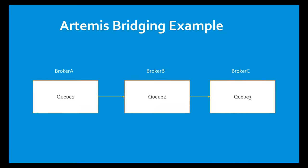Consider this network topology: to transfer messages from Broker A to Broker C — from Q1 to Q3 — the messages must go via Broker B's Q2. A network connection must be established between Broker A and Broker B, so Broker A transfers messages from Q1 to Q2 on Broker B. Broker B listens on Q2 and forwards messages to Q3 on Broker C.